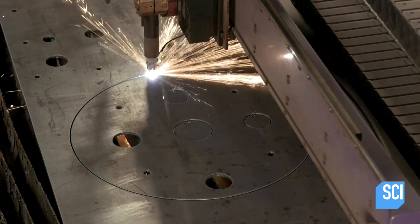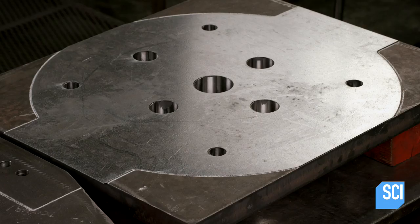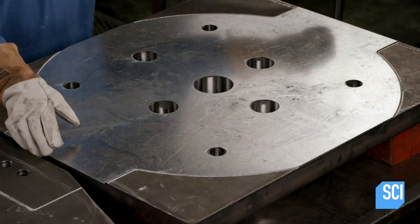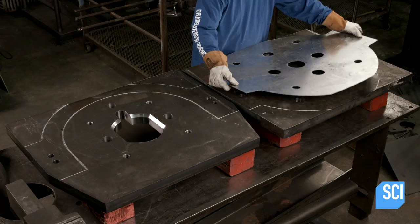At another station, a worker traces around a template, transferring the outline to partially machined parts below. These parts are the crusher's top and bottom panels.